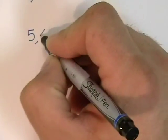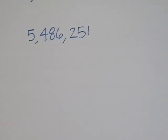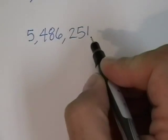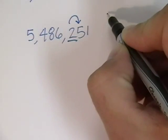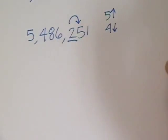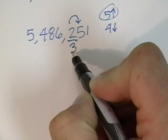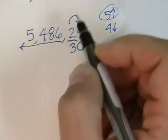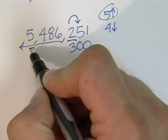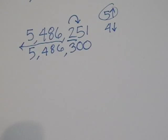Let's try another one. We have the same number: 5,486,251. This time we're rounding to the nearest hundred, so we find the hundreds place — ones, tens, hundreds. We underline that number. We look to the neighbor to the right. We see if it's 5 or more, or 4 or less. It is 5, so we're going to add one more to the 2 — the 2 becomes a 3. These numbers become zero, and all these digits to the left we just bring them down and they stay the same. So we have 5,486,300, and that's rounded to the nearest hundred.